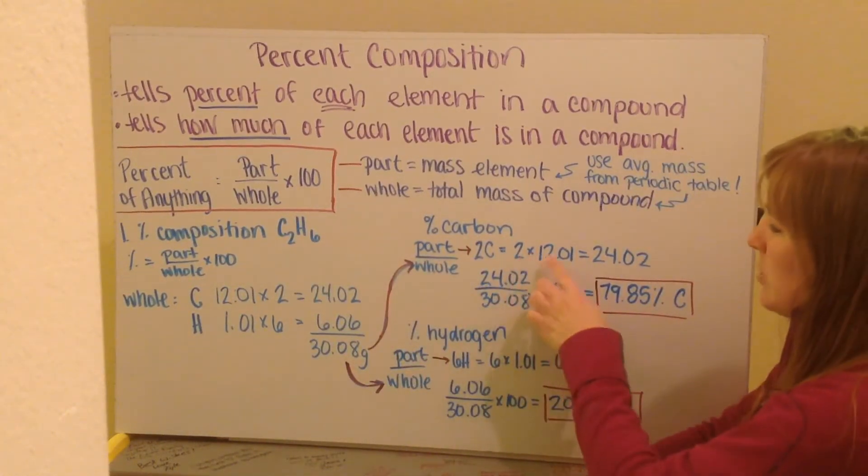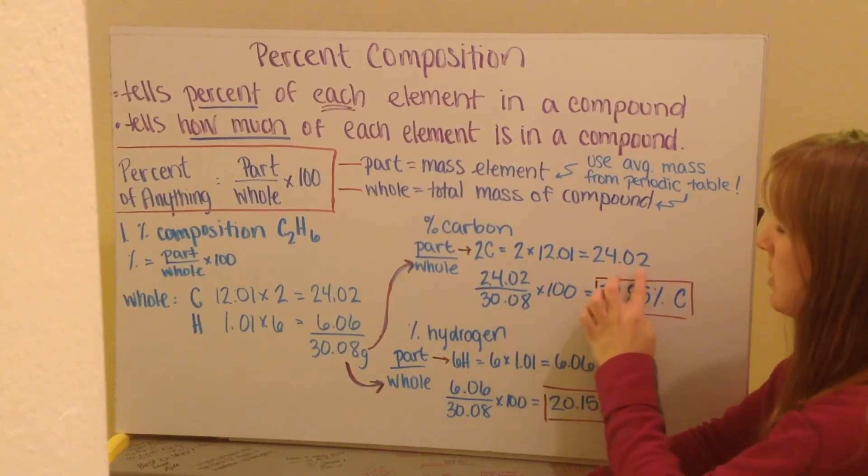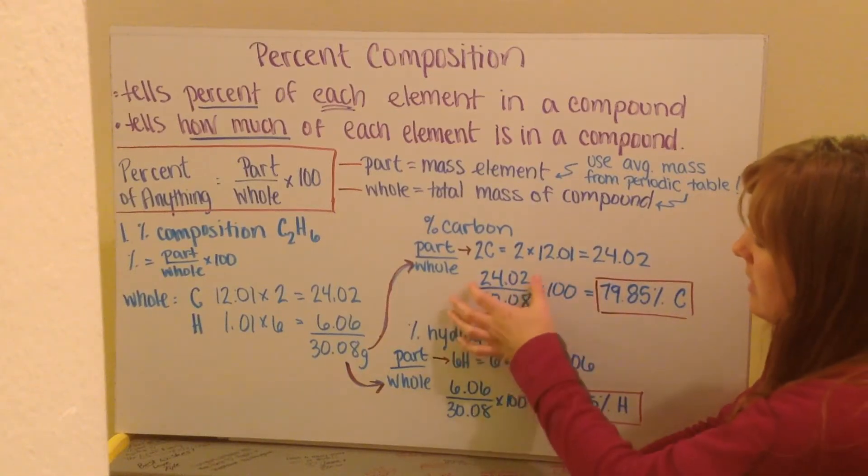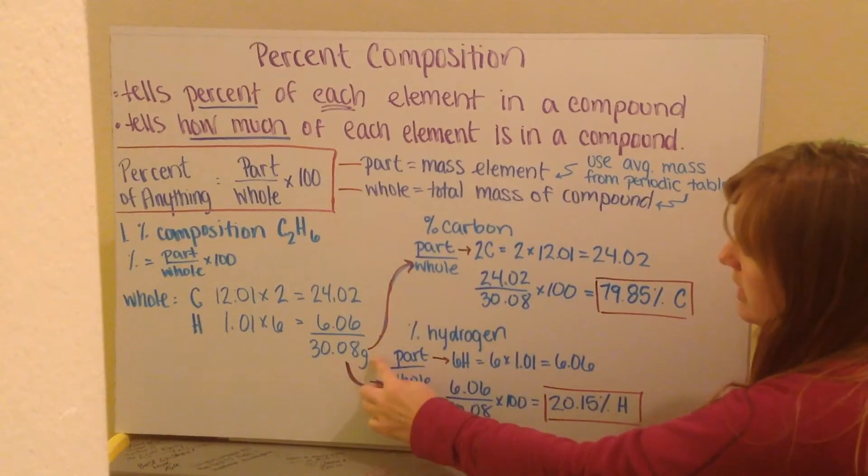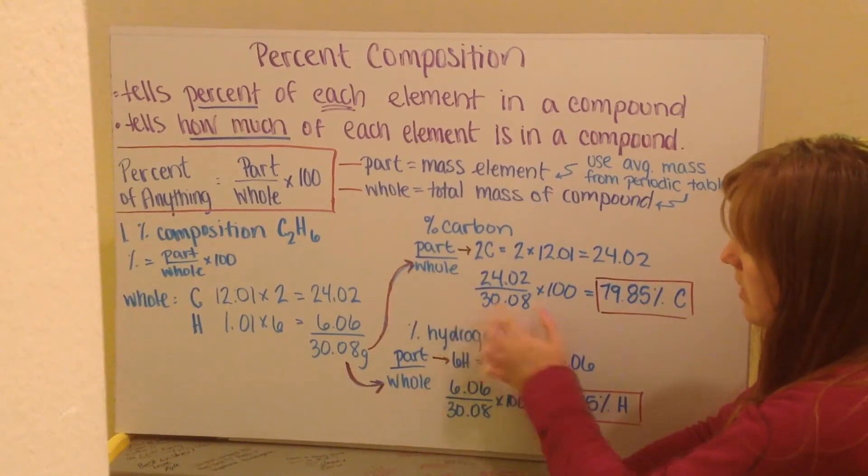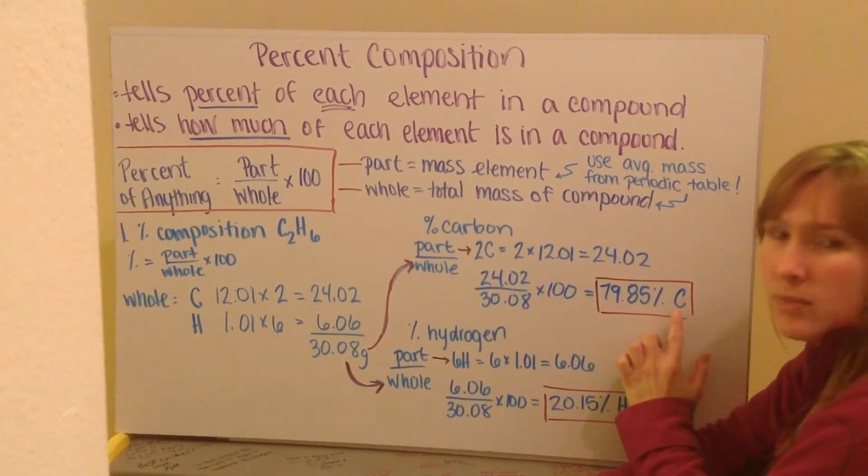I take my 2 times my 12.01, my mass of carbon, and I get 24.02. This is my part. Plugging it into the equation, my part is my 24.02 for my carbon divided by my whole, which I calculated here to be 30.08, multiplied by 100, gives me 78.85% carbon, using the correct number of significant figures.